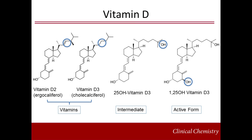Vitamin D broadly refers to a number of different fat-soluble compounds known as secosteroids. These include vitamin D proper, which occurs in two forms: vitamin D2 on the left, and vitamin D3, second from the left. Vitamin D2 and D3 differ by a double bond between carbons 22 and 23 and a methyl group on carbon 24. These vitamins are biologically inactive.